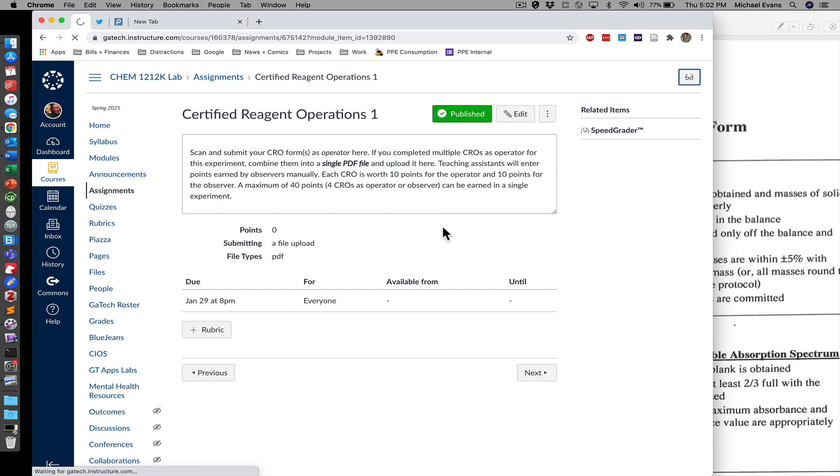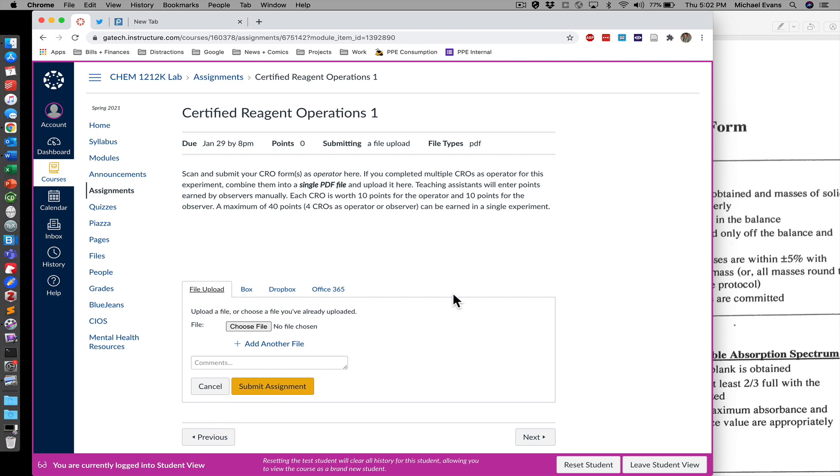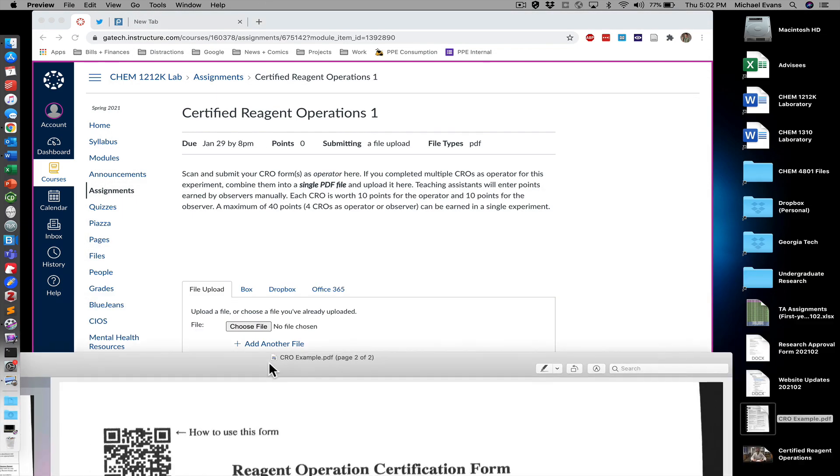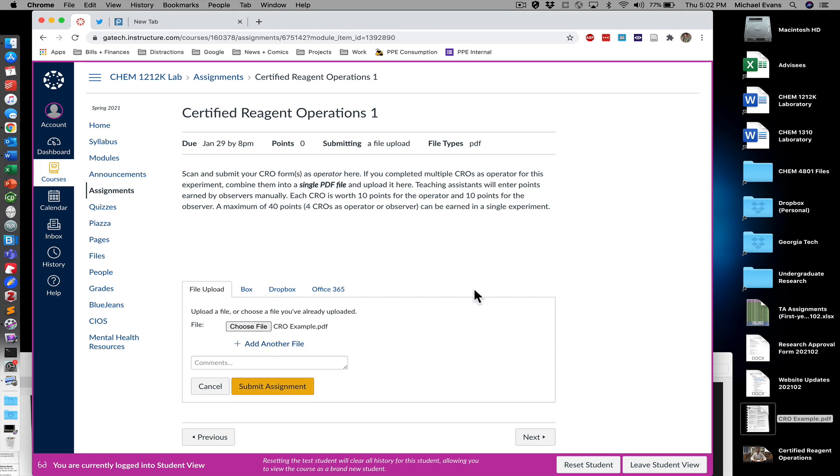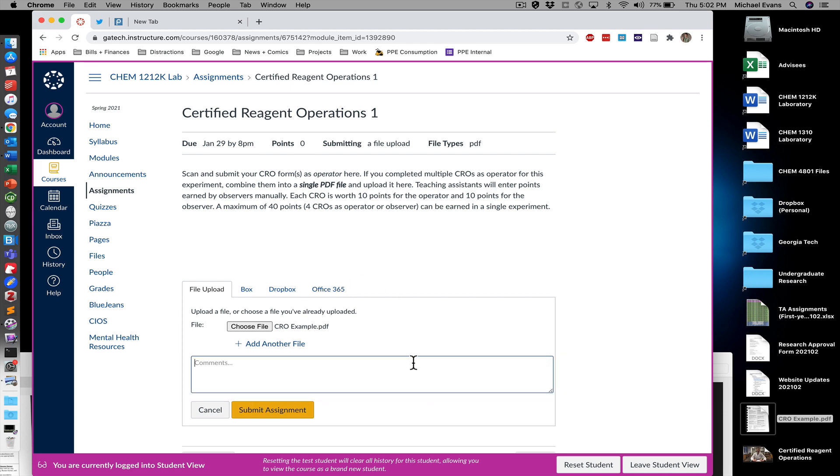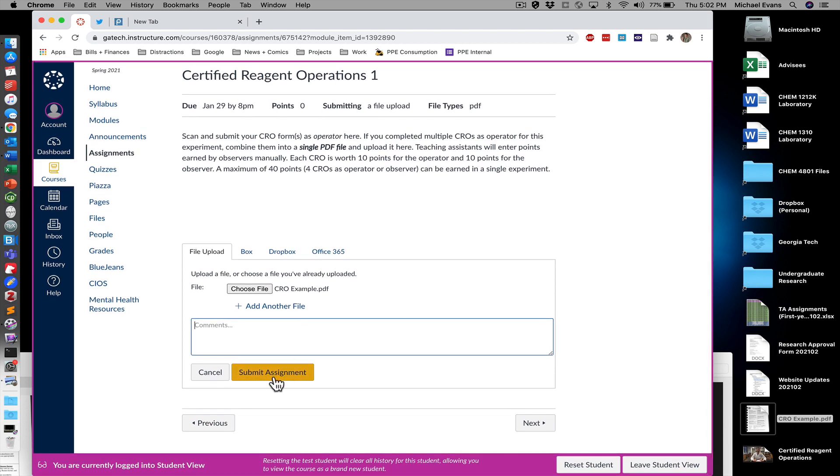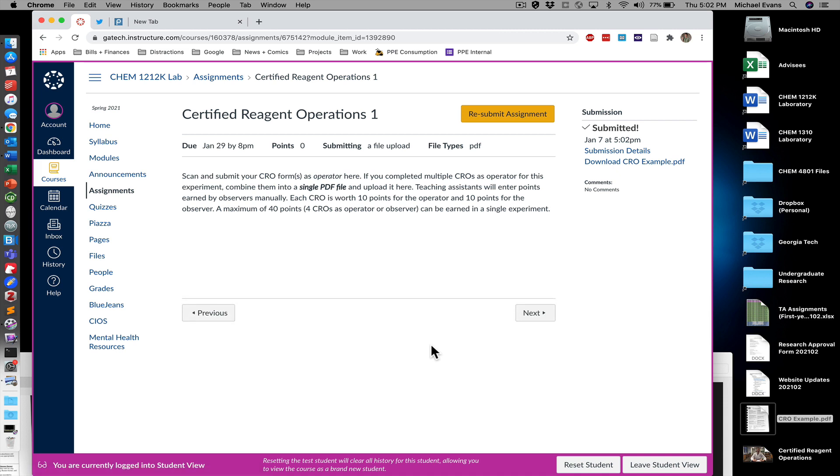Let's move over to the student view and take a look at what this looks like from the student side. You're going to click submit assignment. We're going to navigate to this file. For me it's CRO example dot PDF. This is restricted to PDF files, so if you try to submit something else it's going to throw an error. If you would like to add a comment, if anything is weird about the form, feel free to add a comment here. Then simply submit assignment. Very shortly afterwards your TA will enter points. This is as simple as verifying that all boxes were checked and the signatures are there. That will earn you 10 points. These numbers vary slightly by course and term.